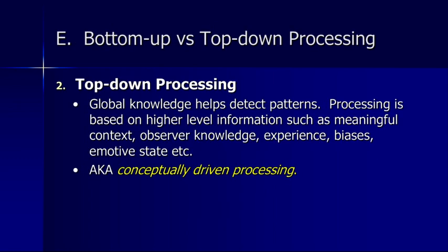One thing about top-down processing that we've all seen and experienced that is problematic has to do with proofreading our own work. The problem is you know what you meant to say, and so when we go to read through something we've written, oftentimes we read what we meant to say rather than what is actually in front of us, because our knowledge and expectations are driving that. It's really difficult to proofread your own work, and even others who proofread it, knowing what you meant, will have difficulty finding errors.